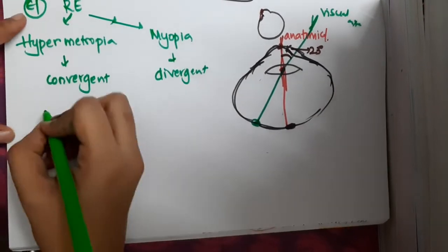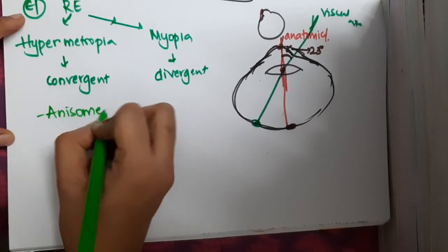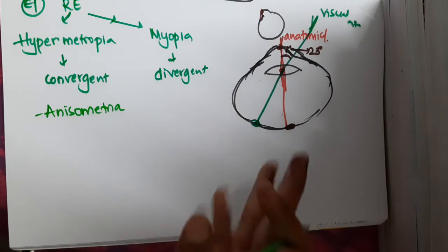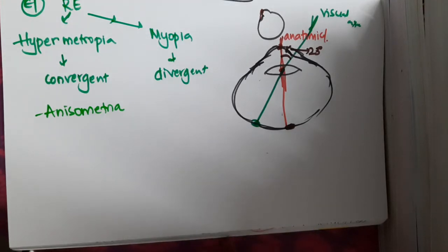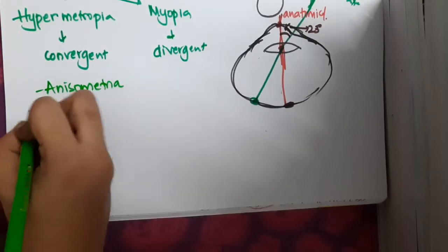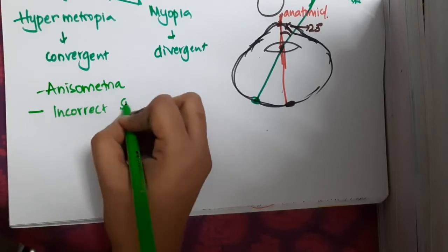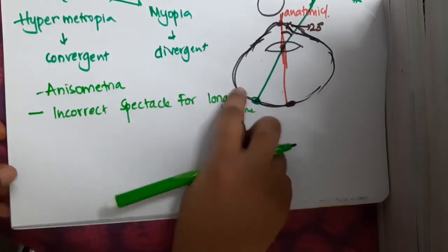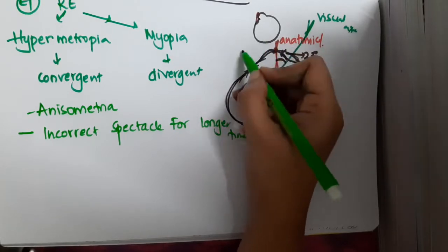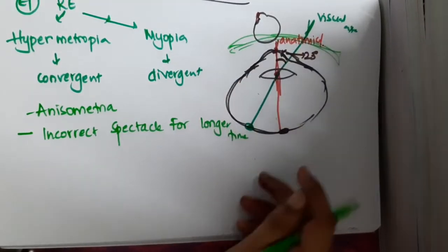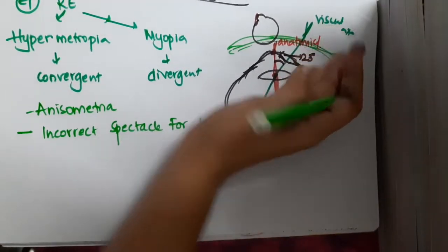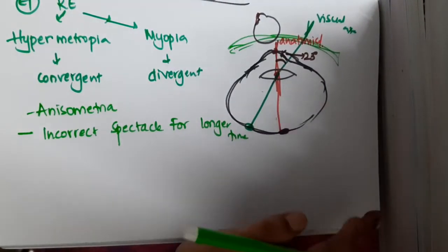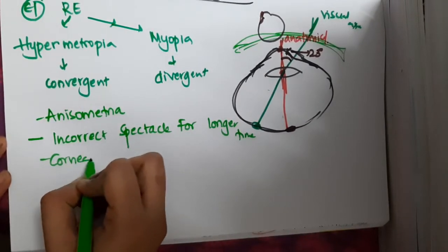In myopia you will see divergent squint. One more cause of squint is anisometropia, where the refractive errors of both eyes are different. As a result, the visual axes of the two eyes will be different, causing concomitant squint. Also, incorrect spectacle use for a longer time means the visual axis will not fall on the fovea, either away from or towards it, and either type of squint can result.